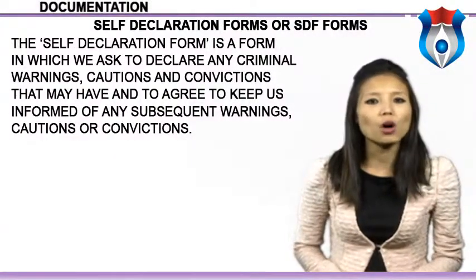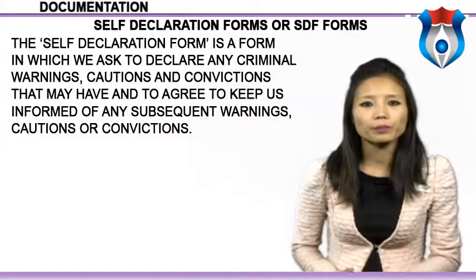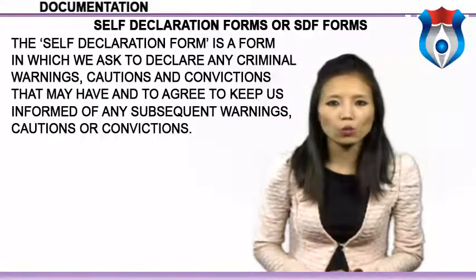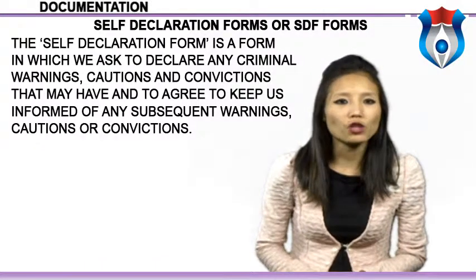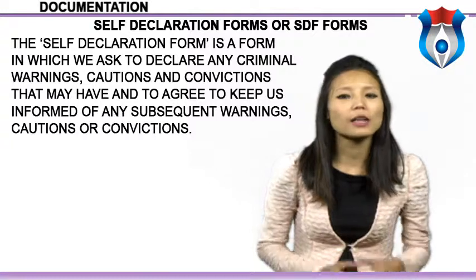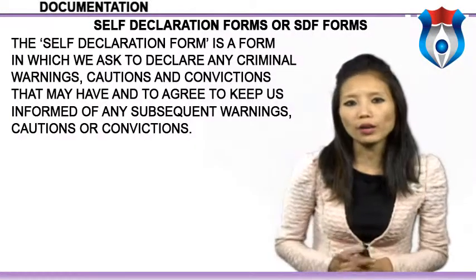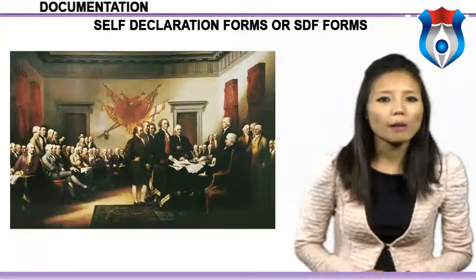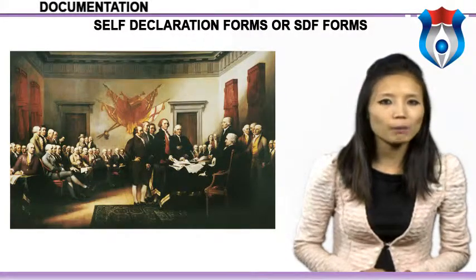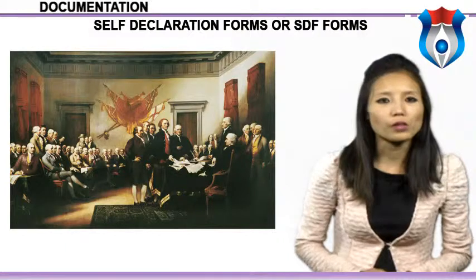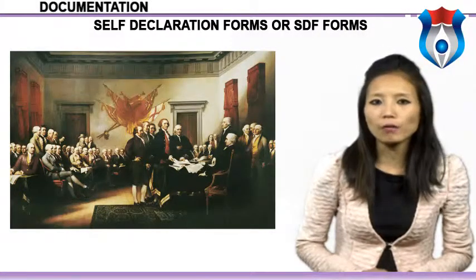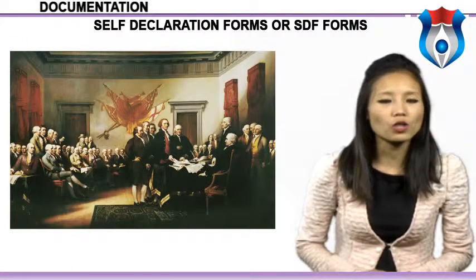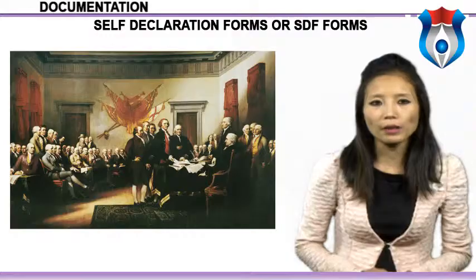Self-declaration forms, or SDF forms, are forms in which applicants are asked to declare any criminal warnings, cautions, and convictions they may have, and to agree to keep the institution informed of any subsequent warnings, cautions, or convictions. It also provides the institution with consent for applicants who have signed up for the DBS update service. If a conviction is indicated, the applicant should provide in a sealed envelope a letter explaining the content and circumstances of the conviction or caution, in order to assist with the processing of the application.